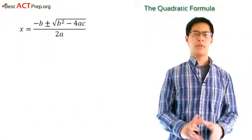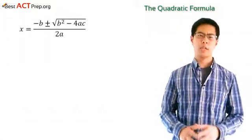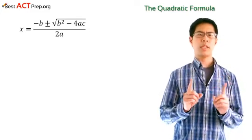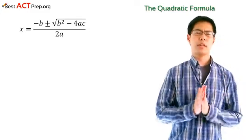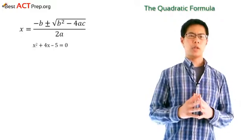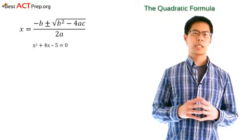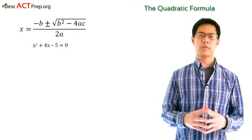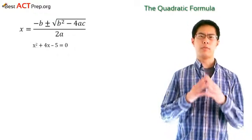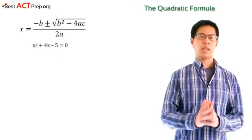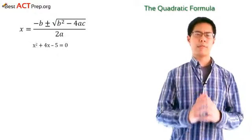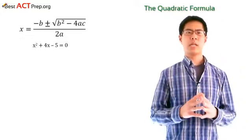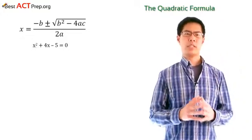Now we're going to try a few examples to get familiar with using this formula. First, let's try an example that works out really nicely. Take a look at this example right here: x squared plus 4x minus 5 equals 0. We can actually factor this quadratic equation into x plus 5 times x minus 1, which gives us negative 5 and 1 as our two solutions. But let's practice using the quadratic formula with this equation just for fun.